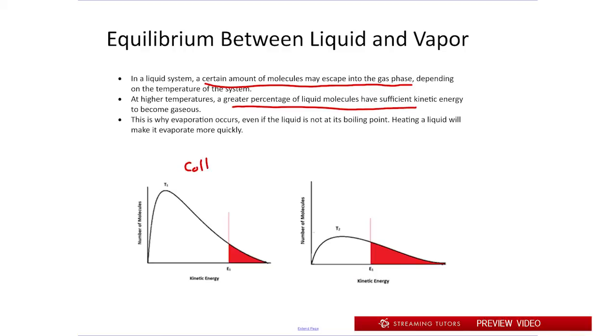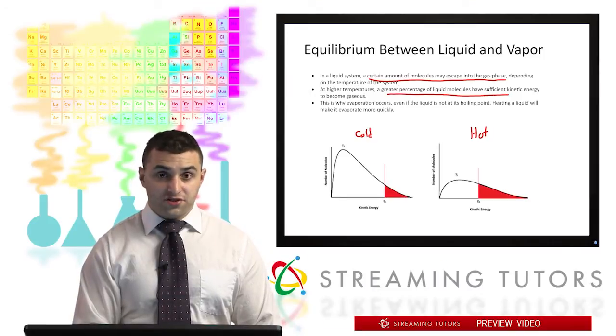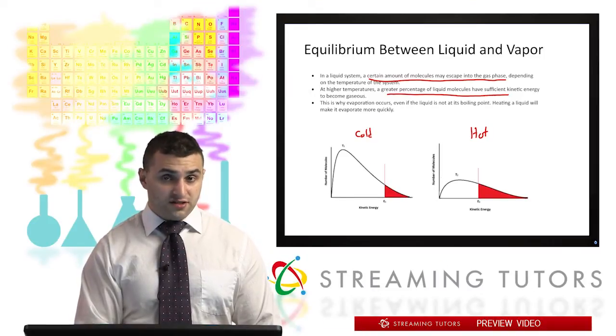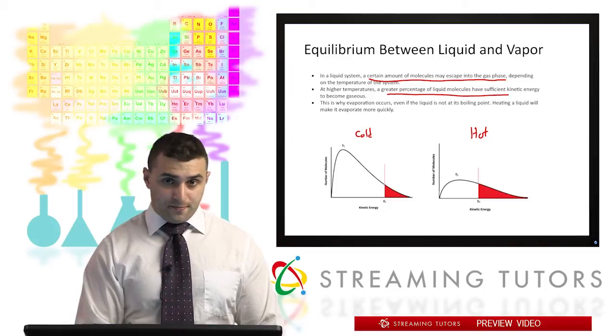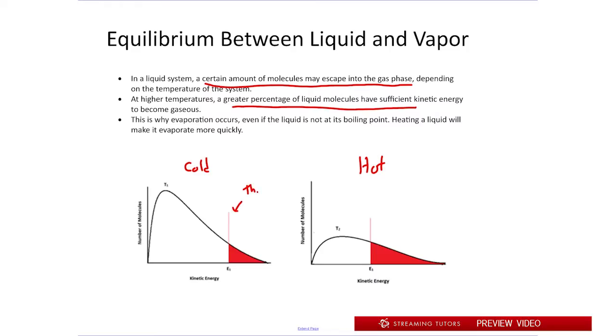So here we have some cold temperature on the left and some hotter temperature on the right. And these two graphs are just distributions of the kinetic energies of molecules in the system. We see this red line here we can call it the threshold energy to escape the liquid. And what we see is that when we have the cold temperature we have a high prevalence of molecules on the left side of that line. That means they don't have enough kinetic energy to escape solution.